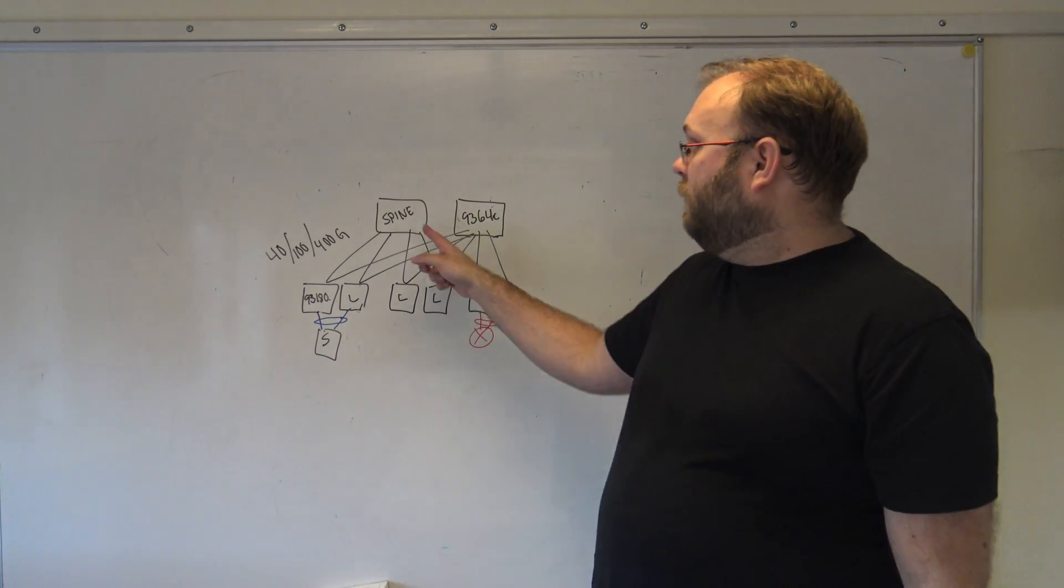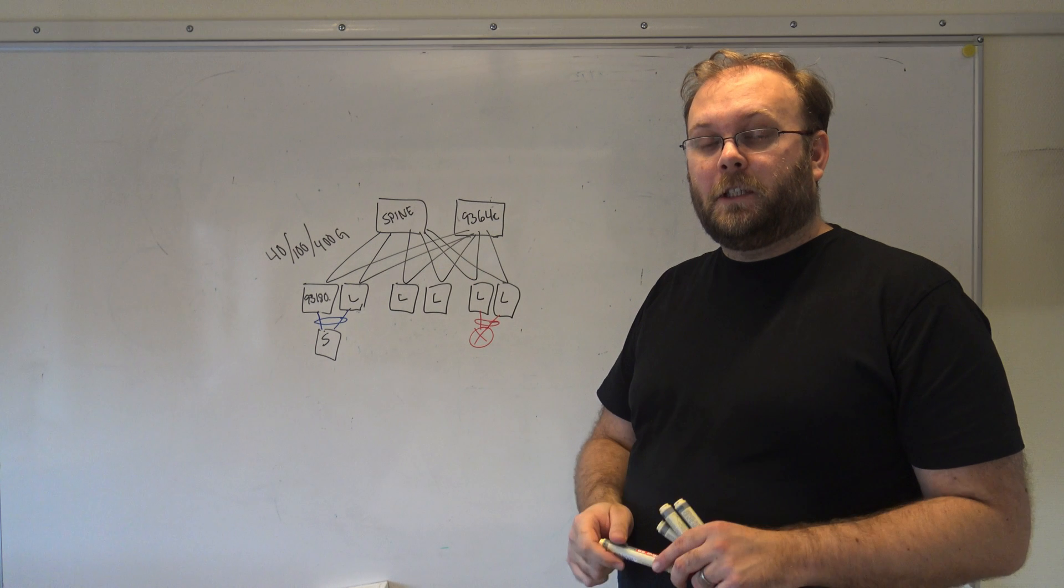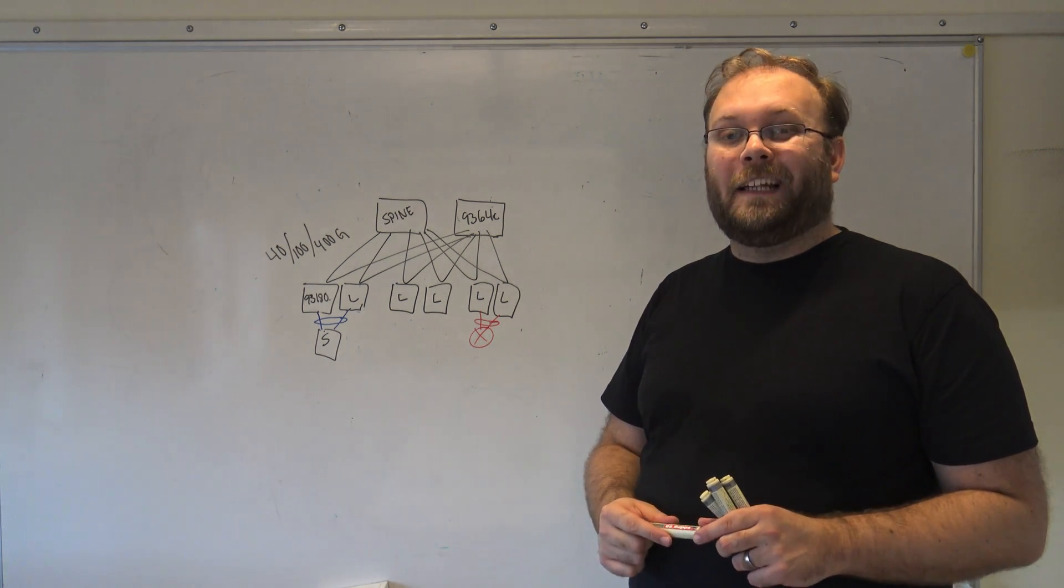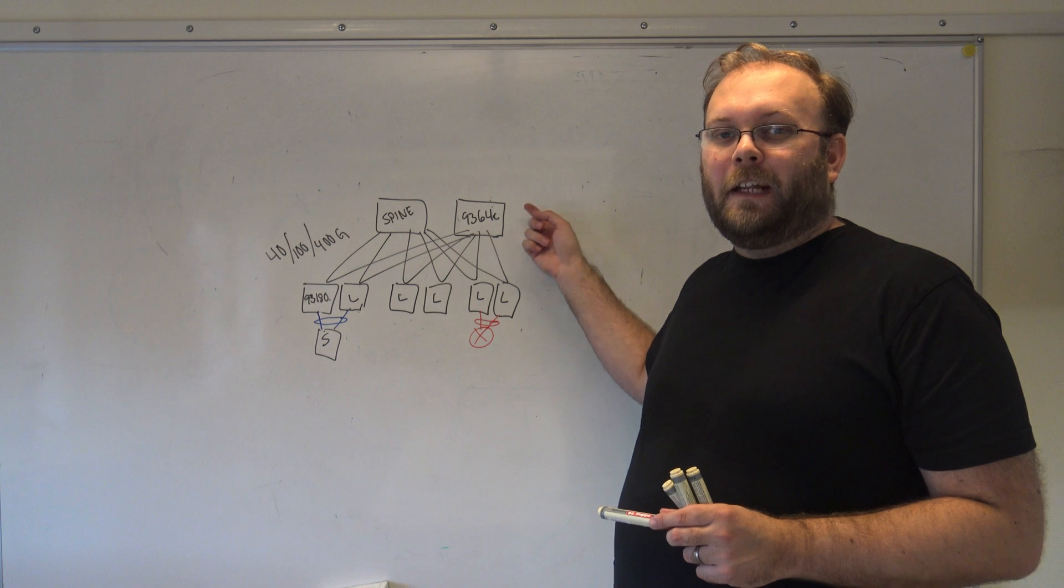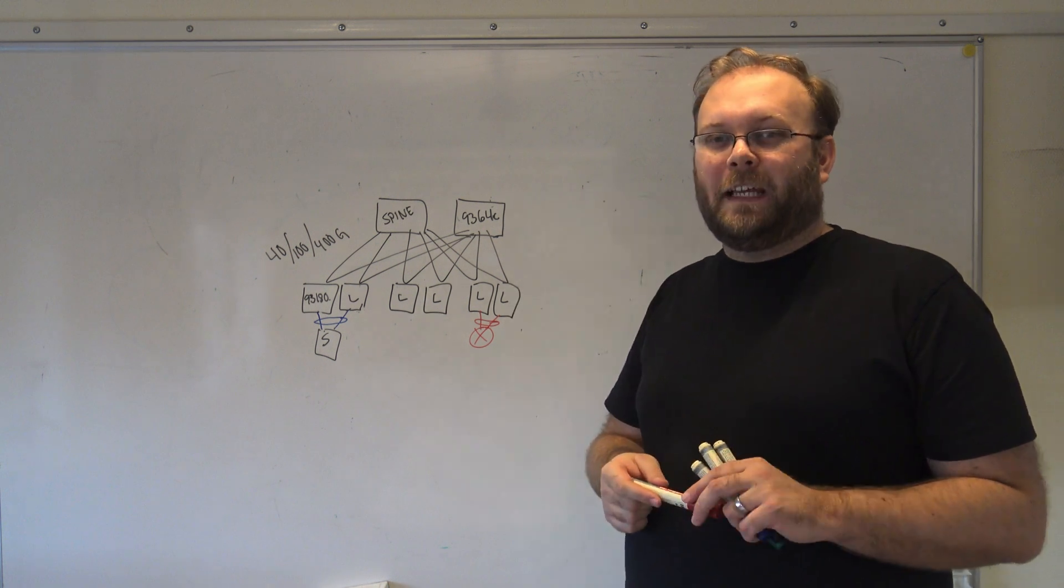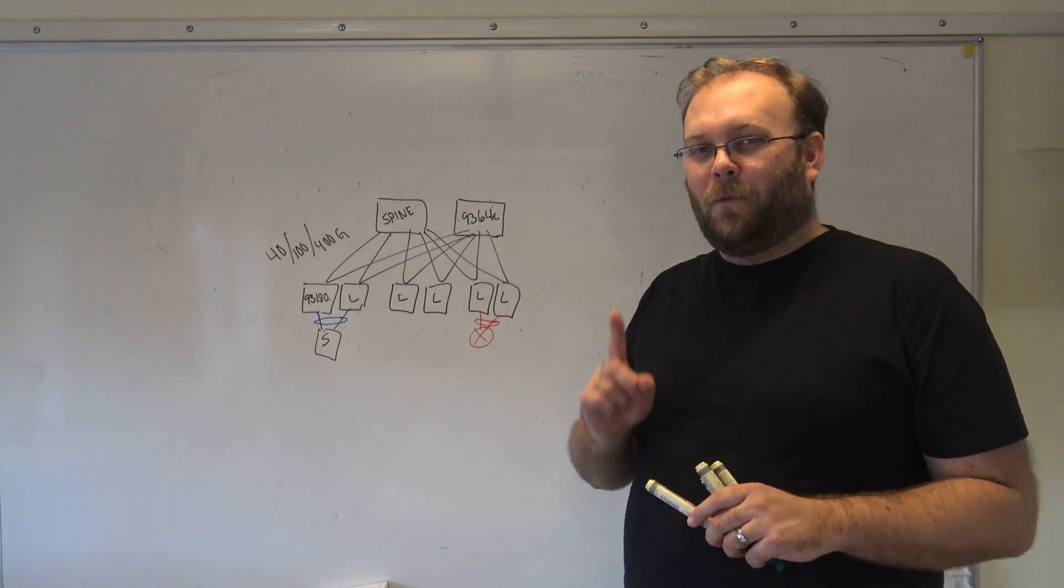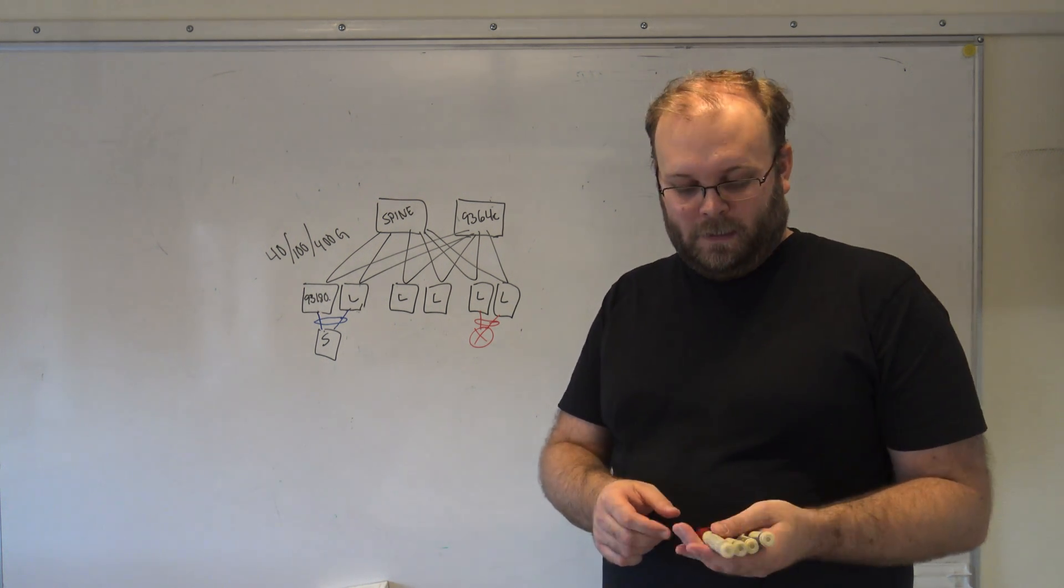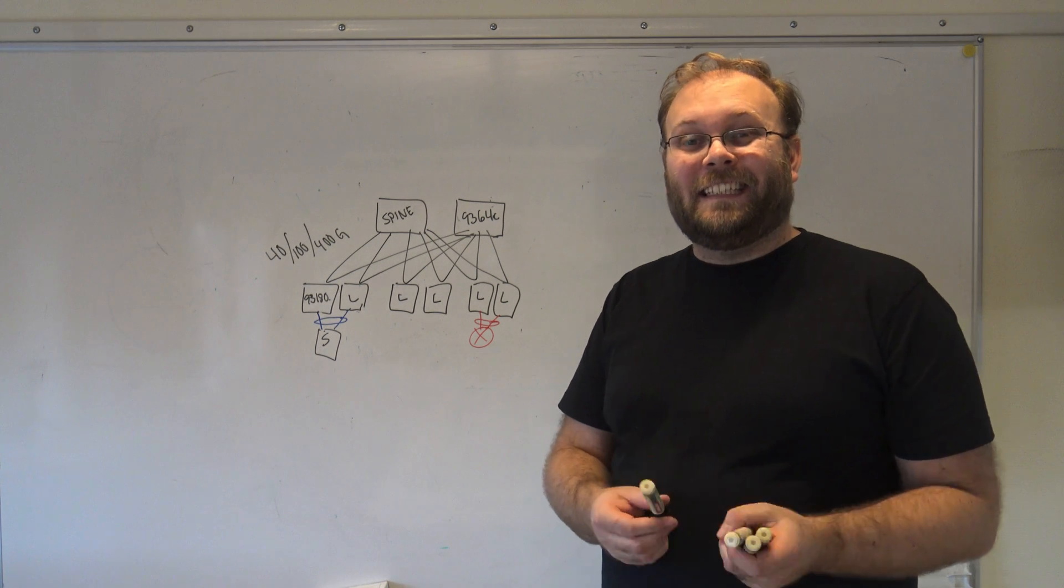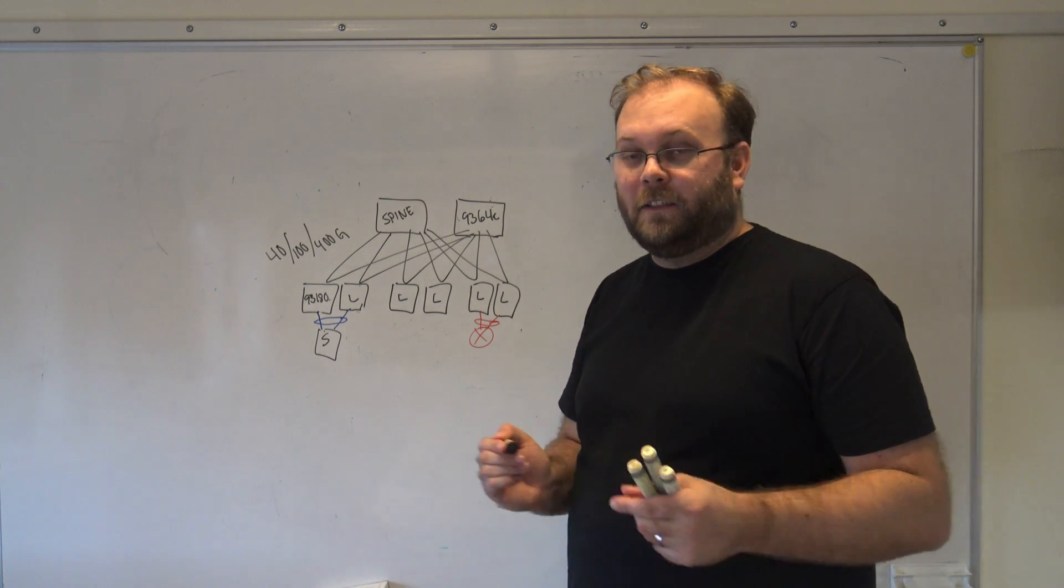So there is no cables between the spine switches and there is no cable between the leaf switches. No equipment other than the leaf switches is connected to the spines with one exception, because you need one exception for making it a rule. So in this case it's the DCI or IPN switches.